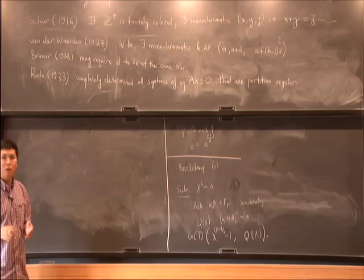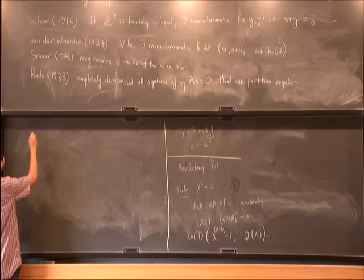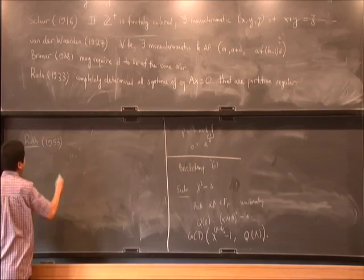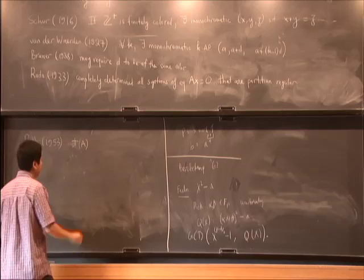So let's move on to density type theorems. Roth proved the following: if we have a set of positive density inside the integers, then this set must contain an arithmetic progression of length 3.